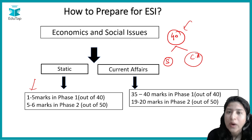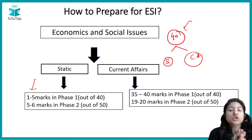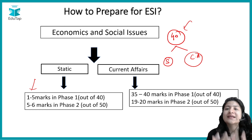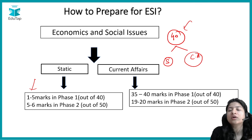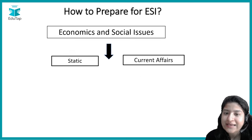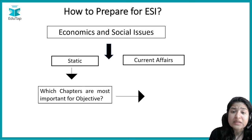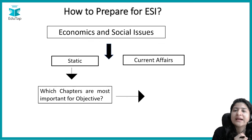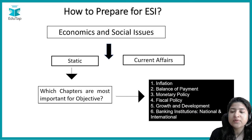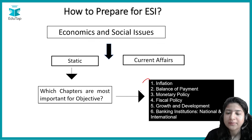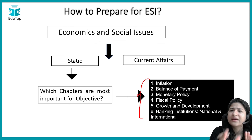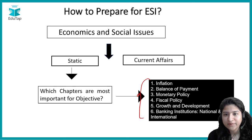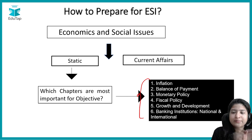For Phase 1 ESI, you have to focus more on current affairs — do as much ESI current affair preparation as possible because it holds more weightage than the static portion. That said, since 1 to 5 static questions are still there, some important chapters are worth covering. Reading these chapters will also develop your basics of economy and help you understand current affairs better.